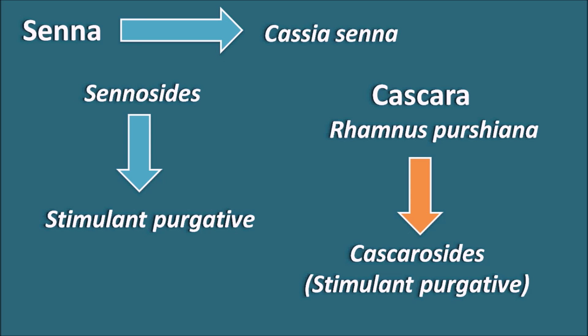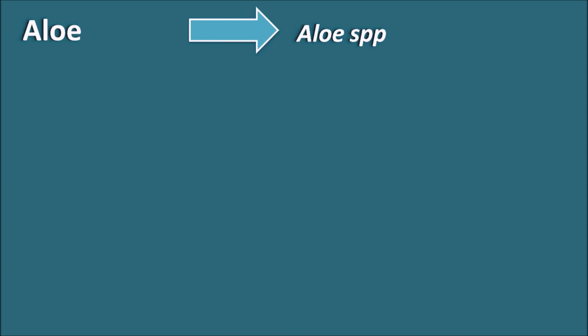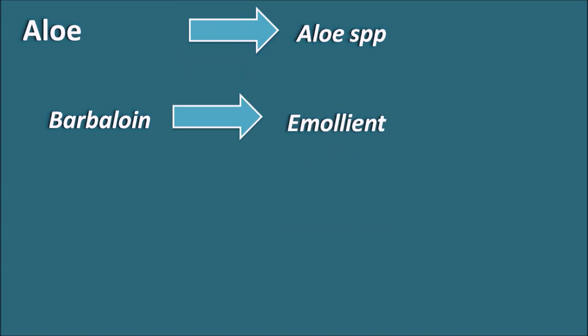Rhubarb is another drug whose extract can be used as both an astringent and a purgative. Similarly, aloe comes from Aloe barbadensis, Aloe officinalis, and many other species. Aloe contains the important chemical constituent barbaloin, which can be used as an emollient. Aloe has been shown to have many important properties including emollient, anti-ulcer, anti-cancer, and mineralocorticoid properties. Aloe is not a single drug but an extract with barbaloin as its main chemical constituent.